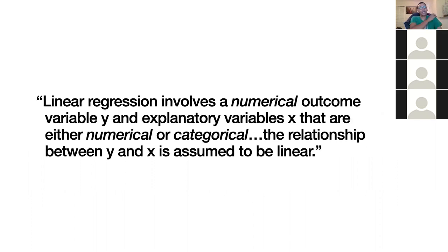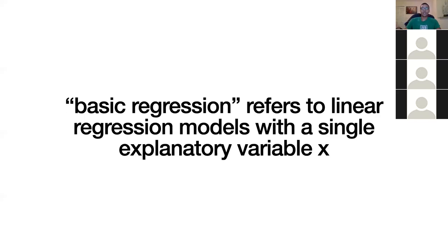They jump into a definition of linear regression. As a direct quote from the chapter: 'Linear regression involves a numerical outcome variable y and explanatory variables x that are either numerical or categorical; the relationship between y and x is assumed to be linear.' Basic regression refers to linear regression with a single explanatory variable x — the topic of this chapter — focused on explanatory modeling.